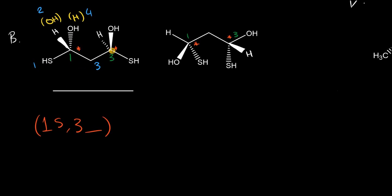At carbon 3, the lowest priority group is already projecting towards the back, so no switch is needed. We assign priority as usual: sulfhydryl takes first, OH takes second, the CH2 group takes third, and hydrogen takes fourth. Drawing the arrow from 1 to 2 to 3 is counterclockwise, so at carbon 3 we have S.